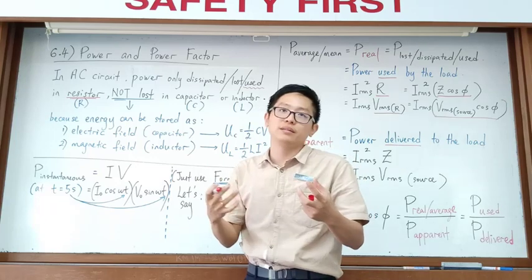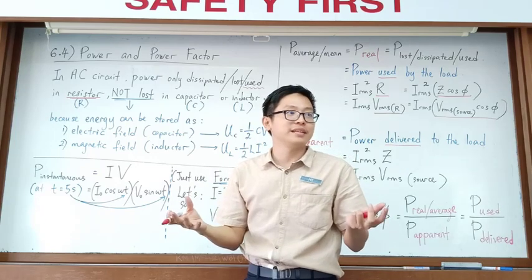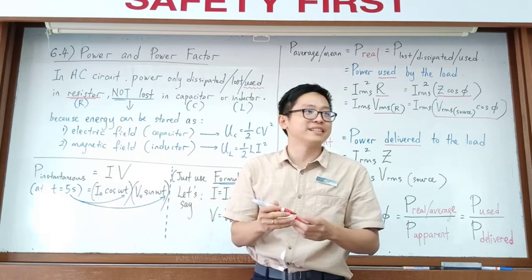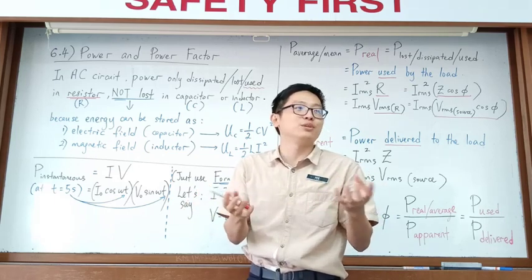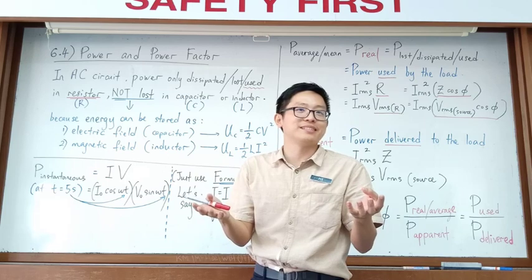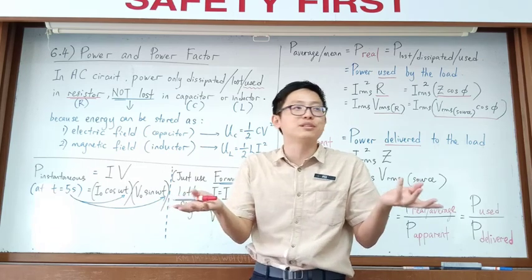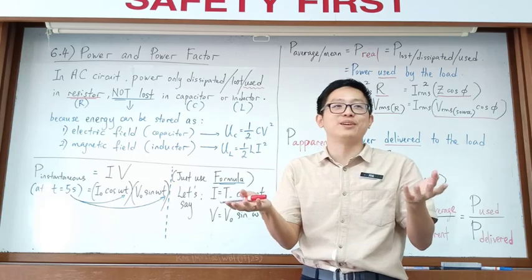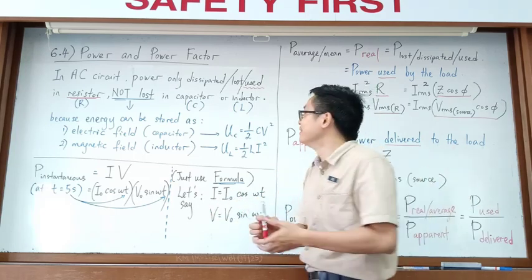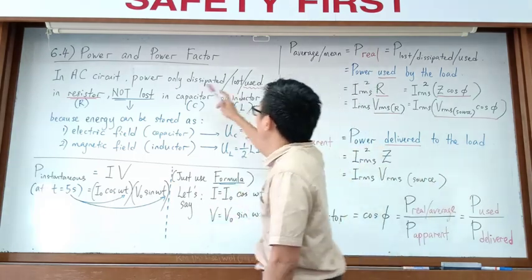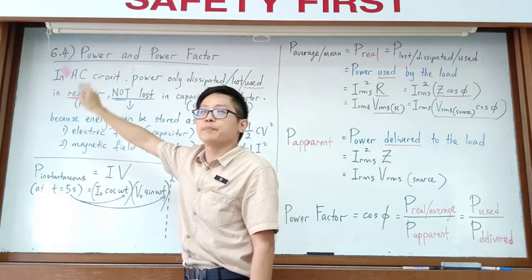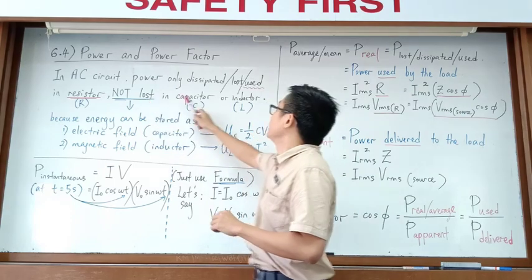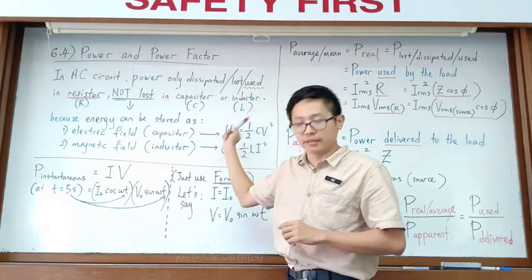When power is used up — lost — you have to pay the electricity bill. If power is not used up, it is not lost. Power is lost only in the resistor, but not lost in a capacitor or inductor.